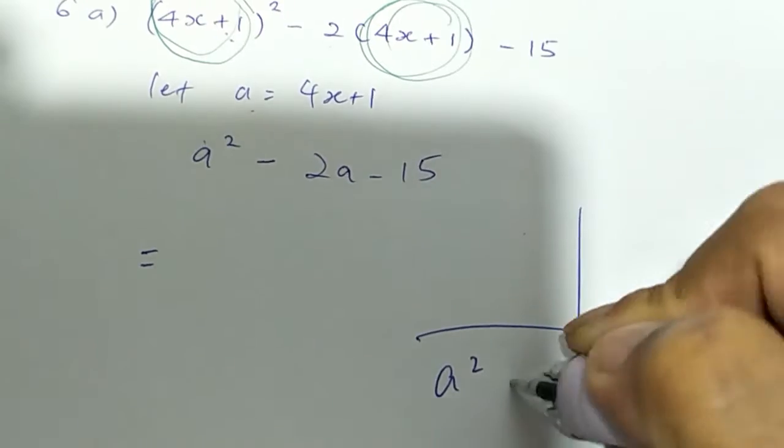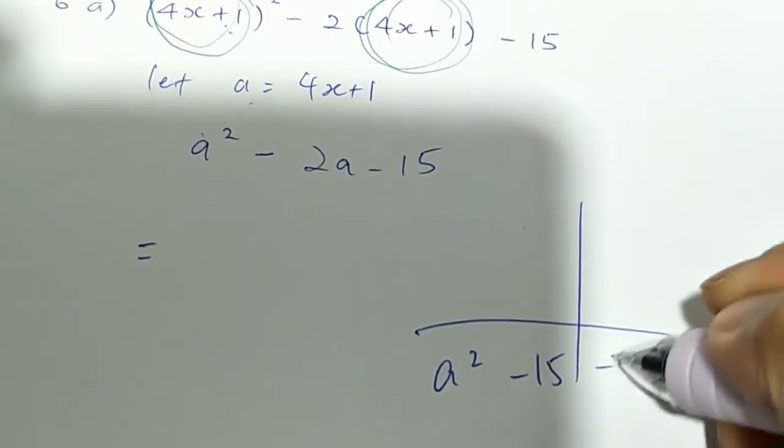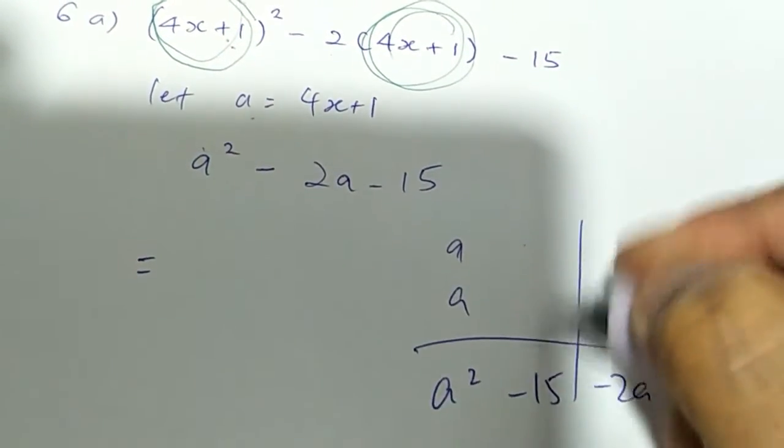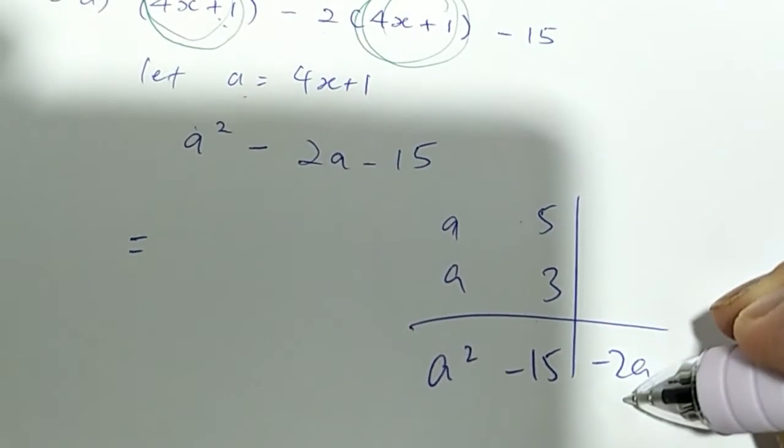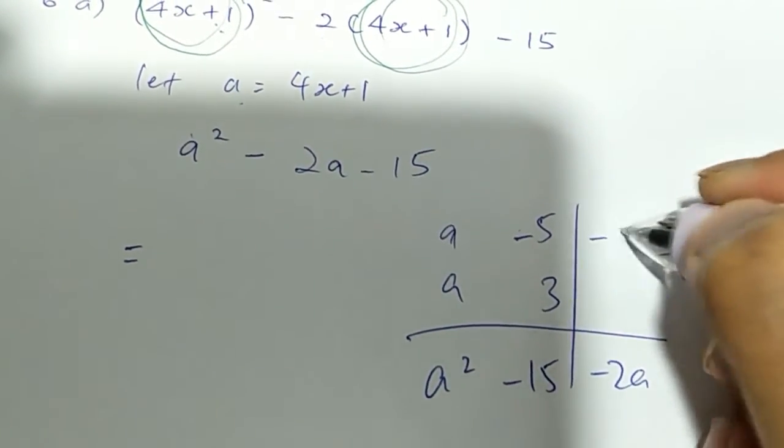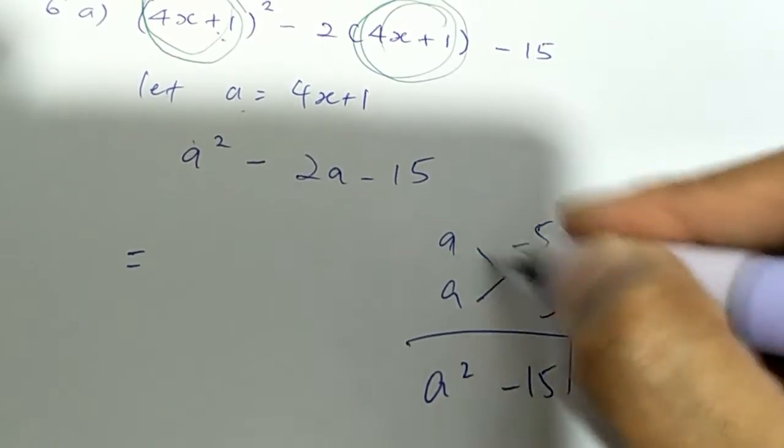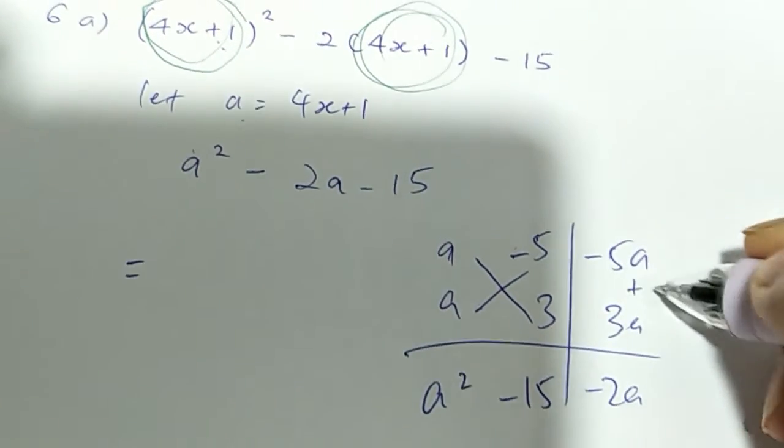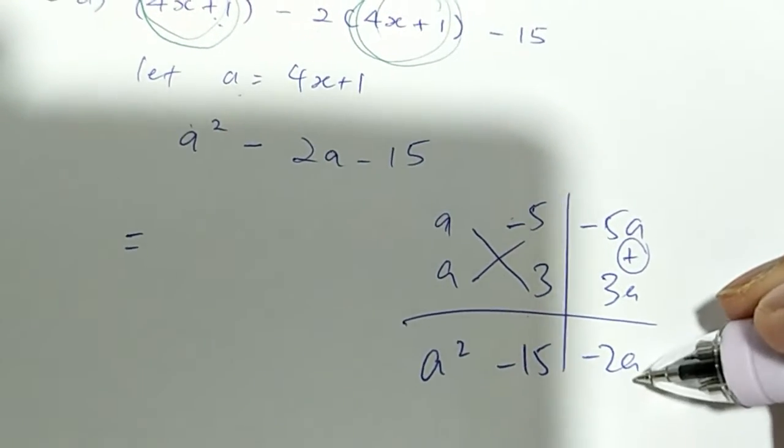So you have a square negative 15 and you have minus 2a. Times a, 15 is 5 and 3. This is a negative, so it must be minus. So this is like that, like that. This is 3a. Add them together. So you get minus 2a.